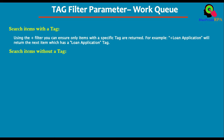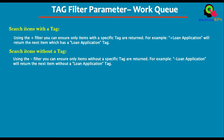Second: search items without a tag. Let's say you want to search but you don't want items that have a specific tag. Using the minus filter you can ensure only items without a specific tag are returned. For example, if you put minus and a specific tag name, it will return all items that do not have that tag.